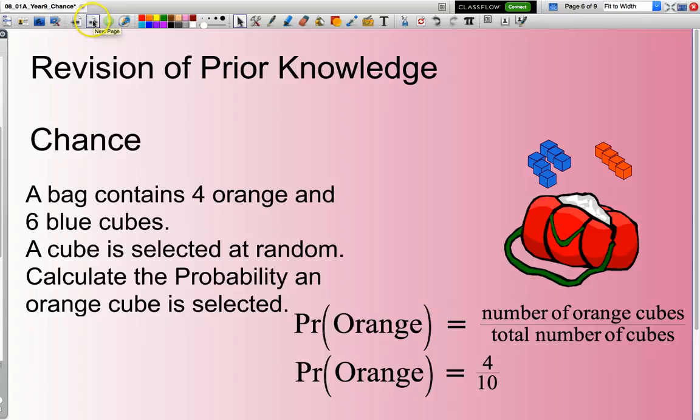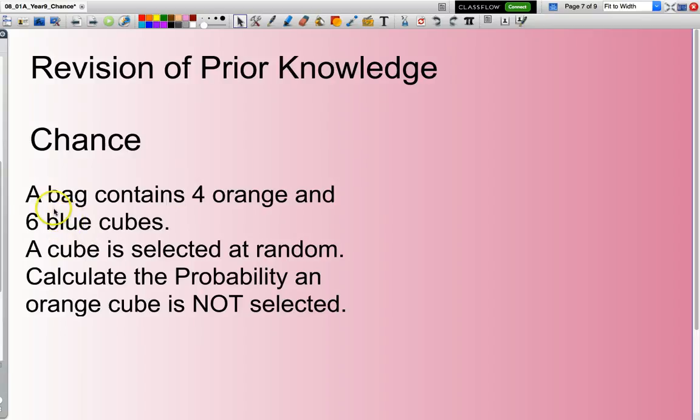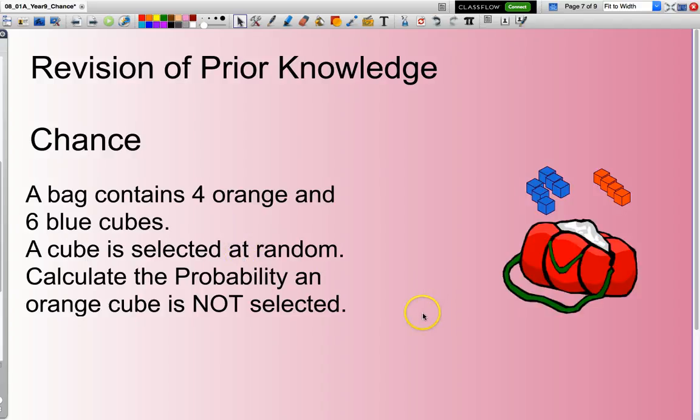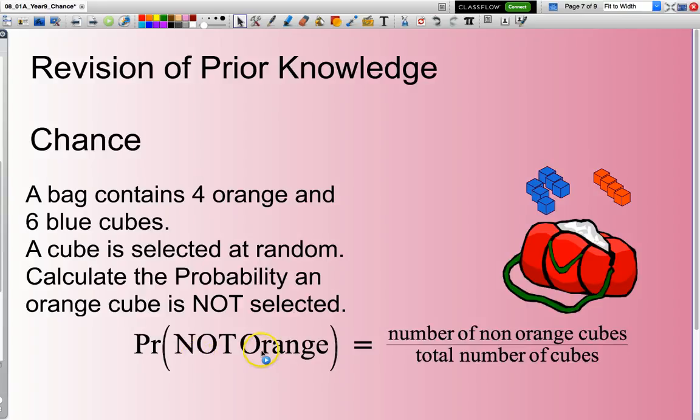Next example. Very similar to the previous one. Just reading this. A bag contains four orange and six blue cubes. A cube is selected at random. Calculate the probability an orange cube is not selected. The only difference between this and the previous question was the word not. So again, here is my picture. And this time, I do not want to select an orange cube. So the probability of not selecting an orange cube equals the number of non-orange cubes divided by the total number of cubes. Well, how many cubes in here are not orange? Well, there you go. There are six of them. How many cubes are there in total? Well, there are ten. So there you go. Not orange equals six out of ten, or if you want, you could simplify that to be three out of five.